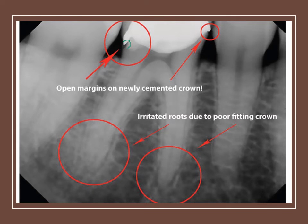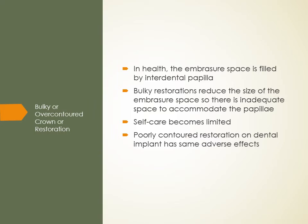Bulky or over-contoured crowns or restorations reduce the size of the embrasure space. In health, the embrasure space — the triangular shape between teeth — is normally filled by the interdental papilla, which protects the col from food packing. Bulky restorations create inadequate space to accommodate the papilla, making it harder for patients to floss and keep the area clean. Poorly contoured restorations on dental implants have the same adverse effects.